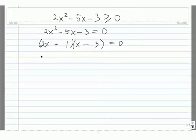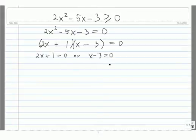From this, we use the zero product property. So we know 2x plus 1 has to equal 0, or x minus 3 equals 0. So x equals negative 1 half, or x equals 3.